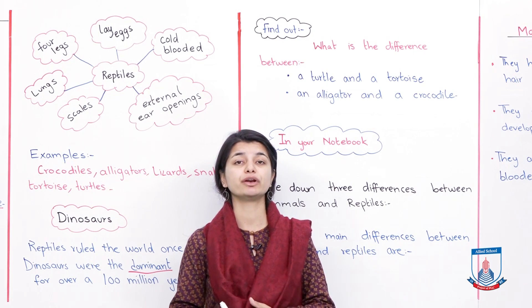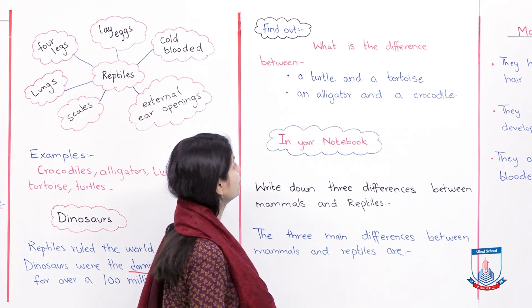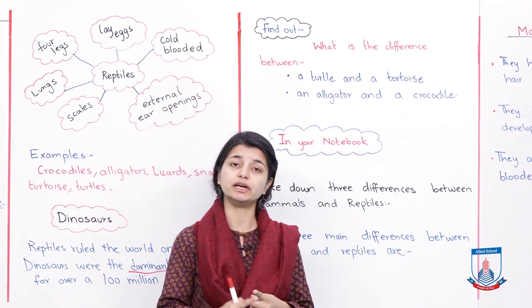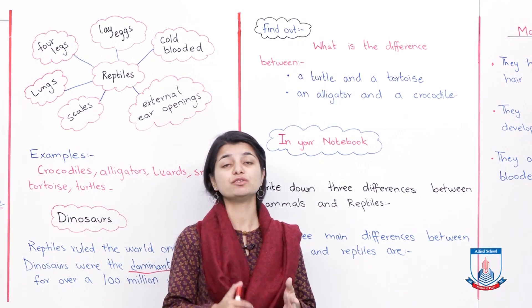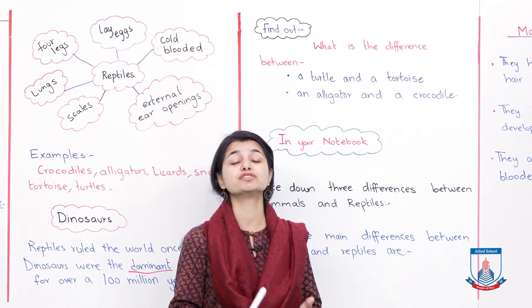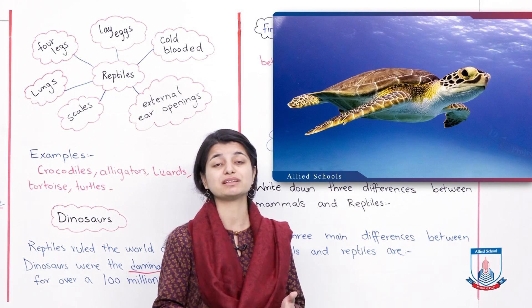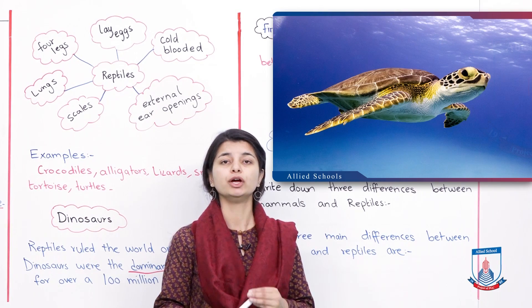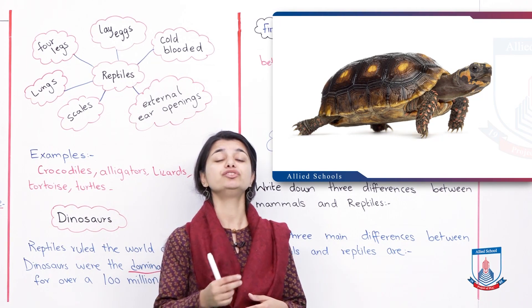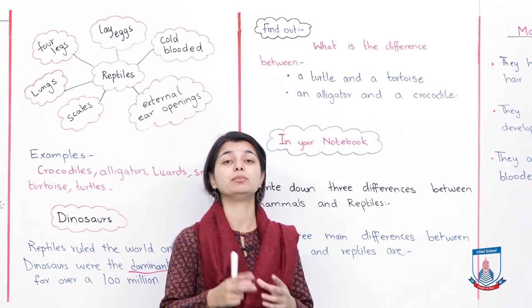Now let's look at an interesting question from the book: what is the difference between a turtle and a tortoise, and between an alligator and a crocodile? These animals look very alike. Looking at the images, the difference between a turtle and a tortoise is that the turtle's shell is comparatively thin, while the tortoise's shell is very thick and round.